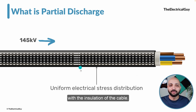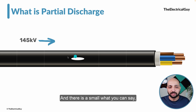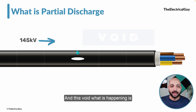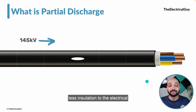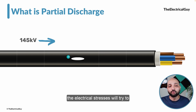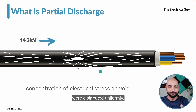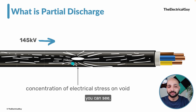But if there is some issue with the insulation — maybe a manufacturing defect or damage during installation — there will be a small damage to the insulation called a void. This void offers less dielectric resistance to the electrical stresses, and as a result the electrical stresses will concentrate on this void, as you can see on screen.